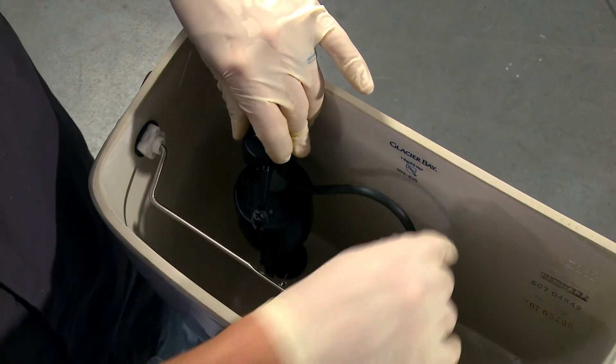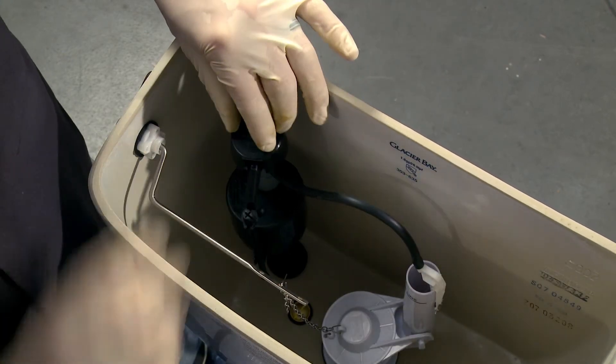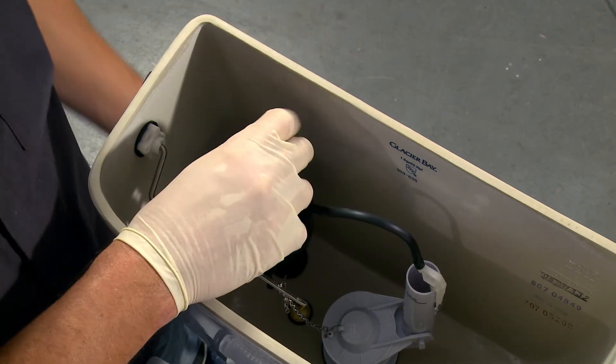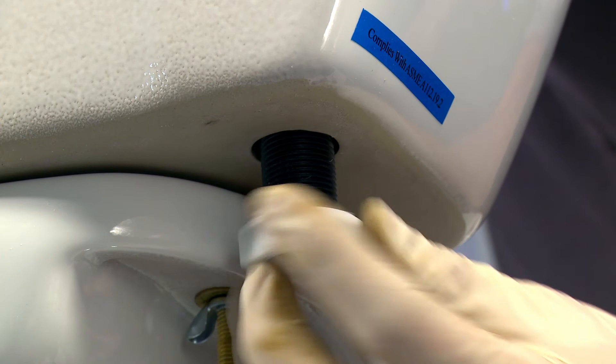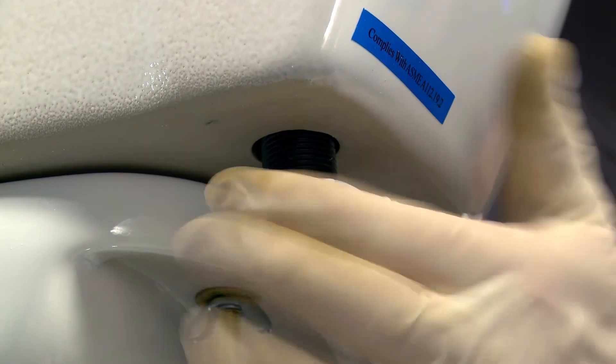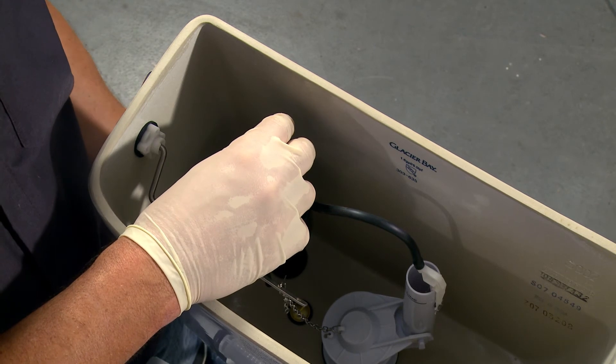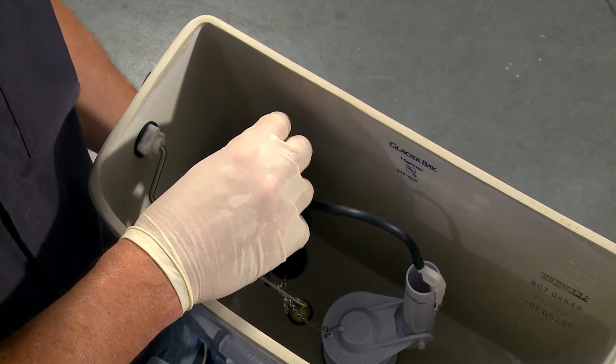That will allow water to enter and fill the tank. At this point, we're going to put the securing nut on the bottom. It really doesn't need to be much more than hand tight at all. I usually push down on the fill valve while securing the nut. That compresses that rubber gasket a little bit.